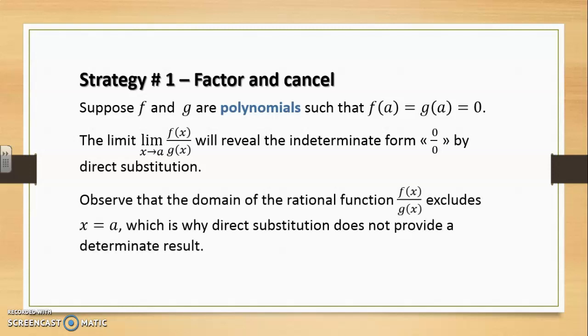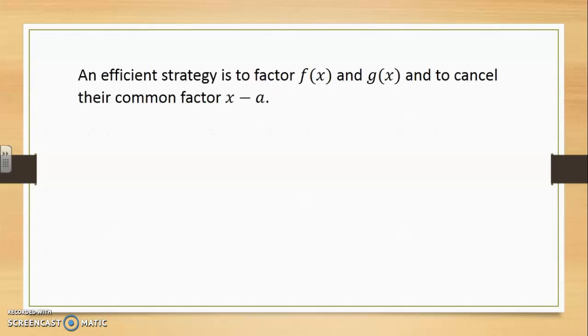Observe that the domain of the rational function excludes x equals a, which is why direct substitution does not provide a determinate result. So an efficient strategy is to factor f(x) and g(x) and to cancel their common factor x minus a.